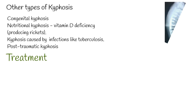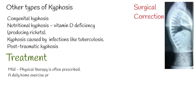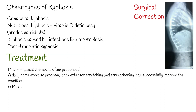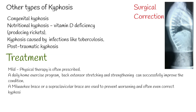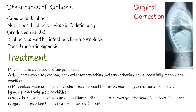For treatment, the only option for severe cases is surgery. For mild cases, physical therapy is often prescribed. A daily home exercise program with back extensor stretching and strengthening can successfully improve the condition. A Milwaukee brace or a supraclavicular brace are used to prevent worsening and often correct kyphosis in actively growing children with curves greater than 65 degrees. The brace is typically prescribed to be worn almost the whole day until the adolescent is done growing.